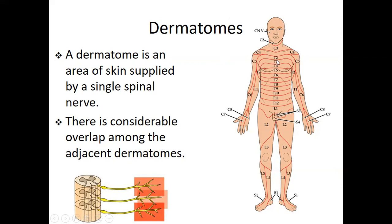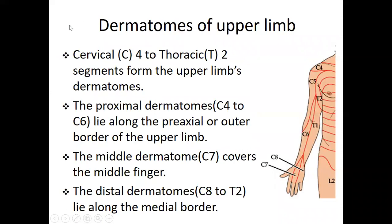You can see the dermatome map showing the area of skin supplied by each single spinal nerve, with segments C2, C3, C4, T2, T3, T4 visible. For the dermatome of the upper limbs, the cervical dermatome extends from C4 to thoracic 2 - from the C4 segment to the T2 segment constituting the upper limb dermatome.